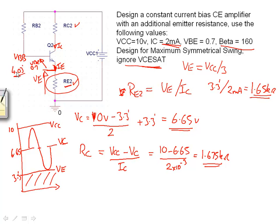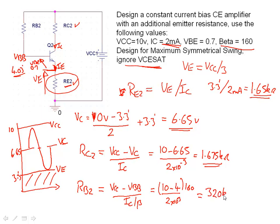So we can just write out RB. In this case RB2, of course these all should have twos on them. RB2 is equal to VCC minus VBB all divided by IC over beta. Put some numbers in again: 10 minus 4, I've just did an approximation there, divided by 2 times 10 to minus 3. I'm going to put beta up on the top there like I did before, 160. We end up with 320 kilo ohms.